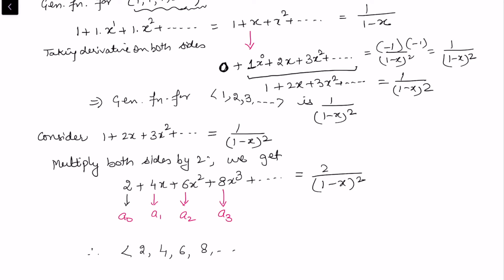So the sequence 2, 4, 6, 8, ... has generating function 2/(1 - x)², or equivalently we say the generating function for this sequence is 2/(1 - x)². That's the answer.